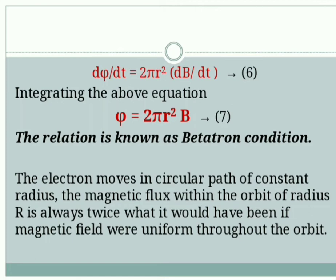For the electron which moves in a circular path of constant radius, the magnetic flux within the orbit of radius R will always be twice what it would have been if the magnetic field were uniform throughout the orbit.